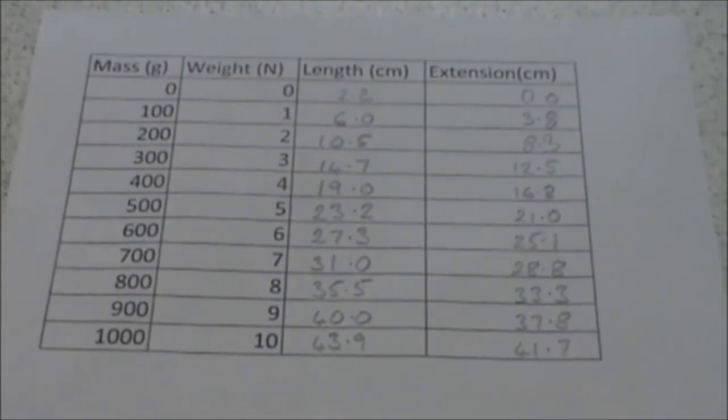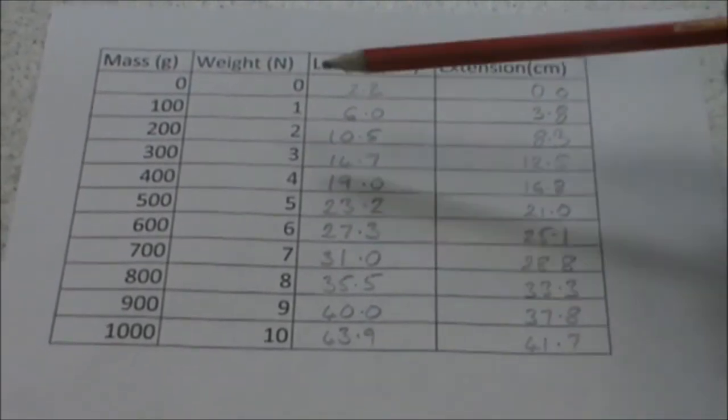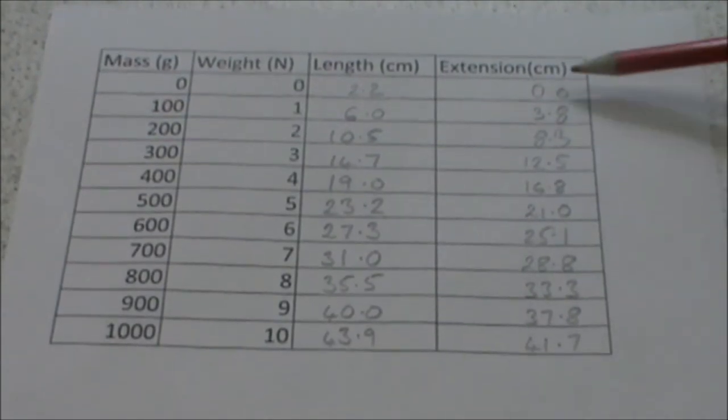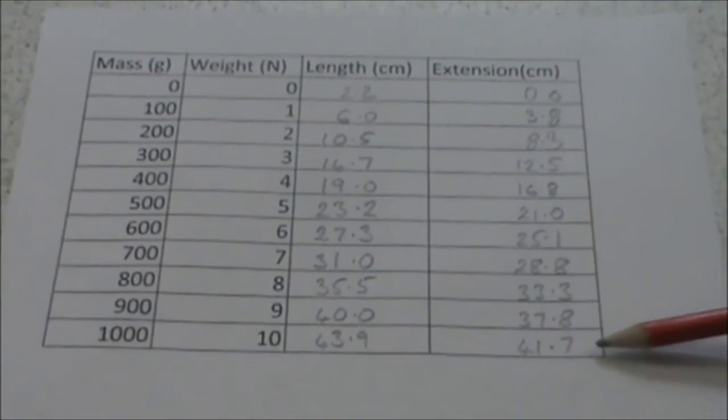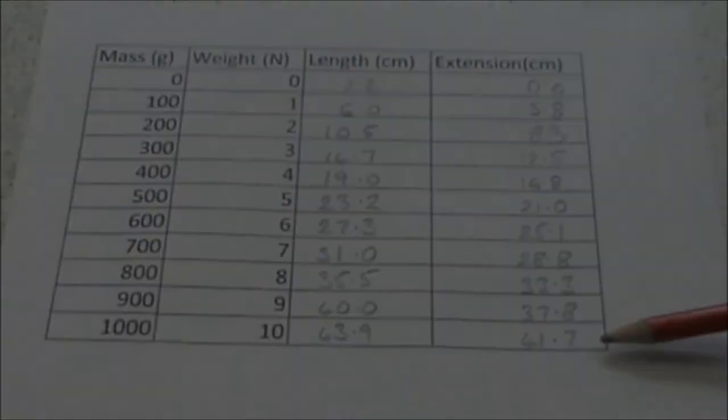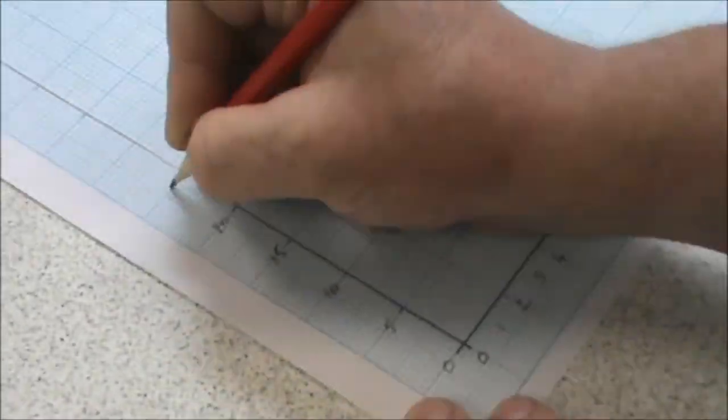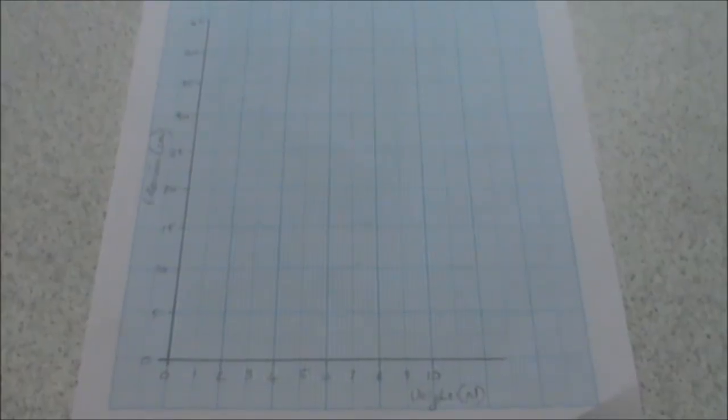Now we have our data we can plot a graph of weight on the horizontal axis on the x-axis against extension on the y-axis. So again we choose our axes accordingly. We're going to go from 0 to 10 on the x and we're going to go from 0 to 45 on the y. So there we have our axes plotted.